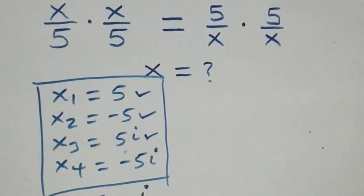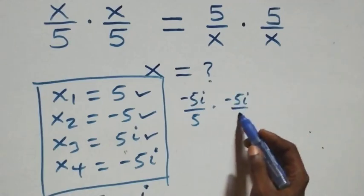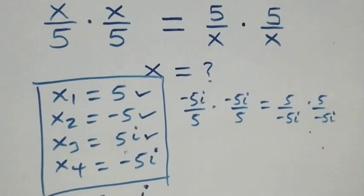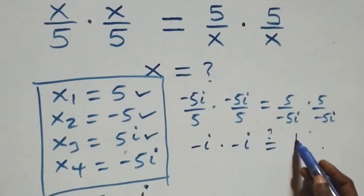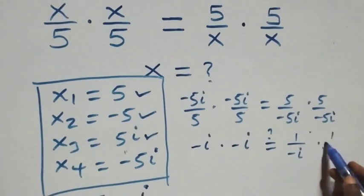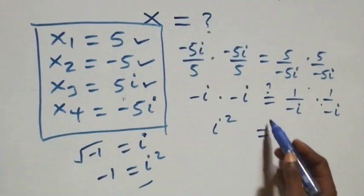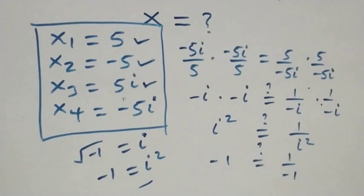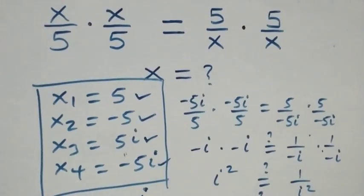Also for x equals minus 5i: (-5i/5) times (-5i/5) equals (5/-5i) times (5/-5i). Here -5i/5 gives -i, so (-i)×(-i) = i squared. Since minus times minus is plus, i times i is i squared. On the right: 1/(-i) times 1/(-i) = 1/i squared. Since i squared equals -1, both sides equal -1. Left answer equals right answer, so minus 5i also satisfies the given problem.